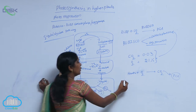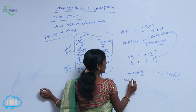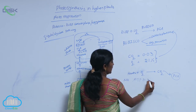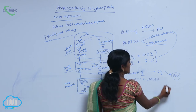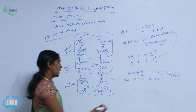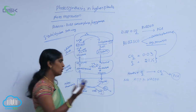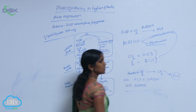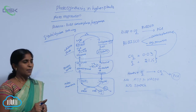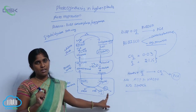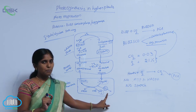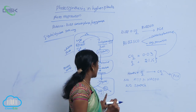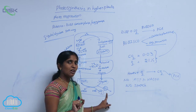Overall, in the entire photorespiration pathway, no ATP and no NADPH2 is released — meaning there is no release of energy. There is no starch production either. However, carbon dioxide is released, which helps to maintain and increase the concentration of CO2 in the photosynthetic apparatus.